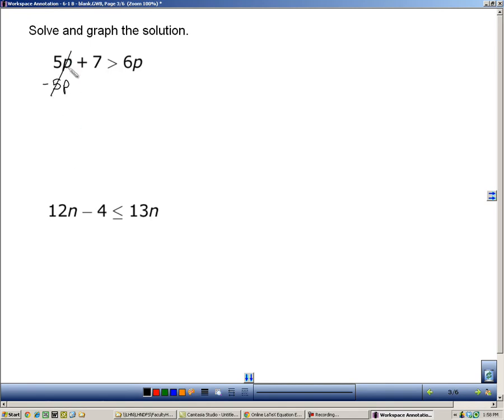5p minus 5p is 0, so you end up cancelling that off, but whatever you do to one side, you have to do to the other. So we'll end up with 7 is greater than 6p minus 5p, which is 1p. The solution has to be written with the p on the left, so I'm going to flip the sign here. So my solution is p is less than 7.